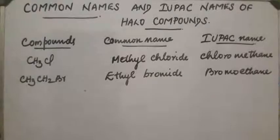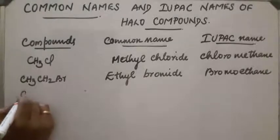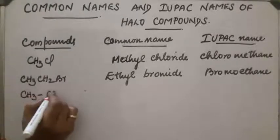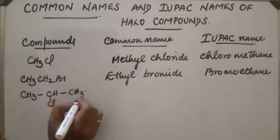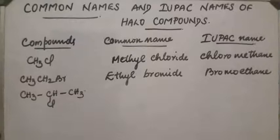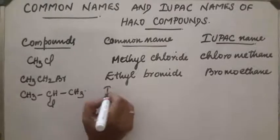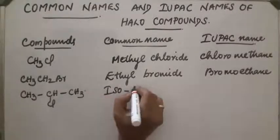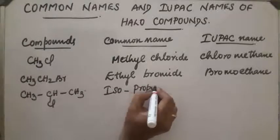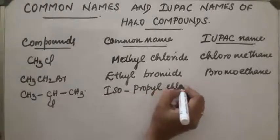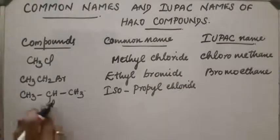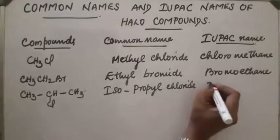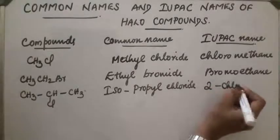Next compound CH3CHClCH3. The common name of this compound is isopropyl chloride. For the IUPAC name, the chlorine atom is at the second position, so it is 2-chloropropane.